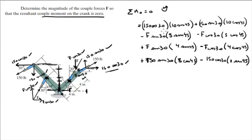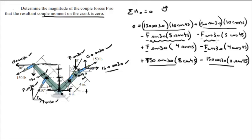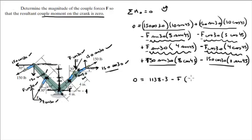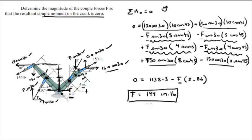Now that you have all your moments, as you can see some of them have F as the only variable, and everything is equal to zero. All you have to do is add the constant terms together and add the F terms together, then apply them in your calculator. You get: zero equals 1138.3 minus F times 5.86. Basic algebra gives you F equals 194. Notice the unit is inch-pounds because the distances are in inches. If you wanted to convert to foot-pounds, divide by 12, but I'll leave the answer as 194 inch-pounds — final answer.